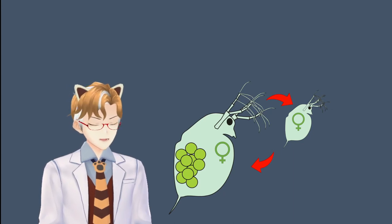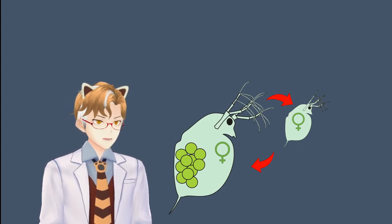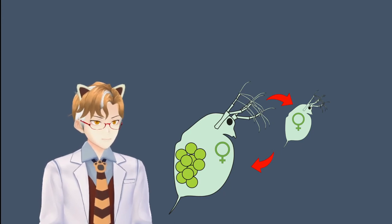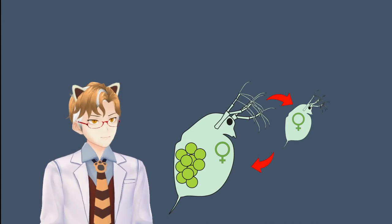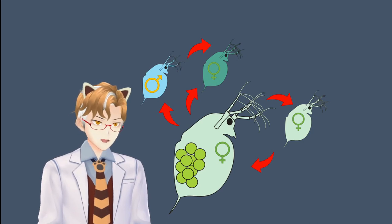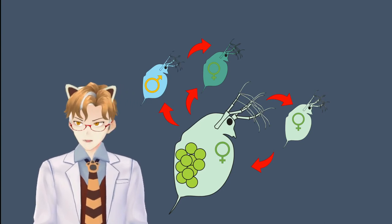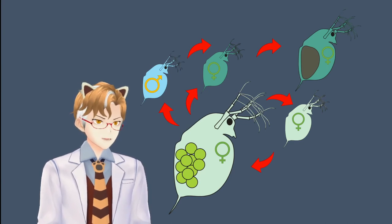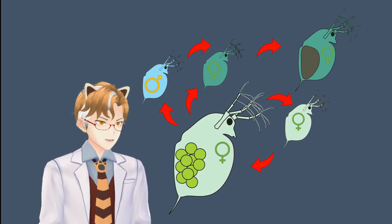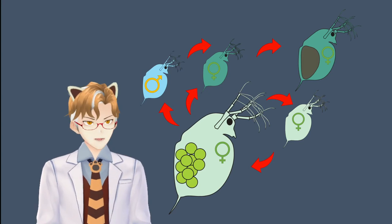Eventually, unfavorable environments will occur for the Daphnia. Seasonally, this could be something like desiccation, cooling water temperatures, overcrowding and low food quality, or even a change in day length. These environmental cues will cause some eggs to develop into males and some into sexual females. When sexual reproduction happens, instead of a new clutch of eggs, the sexual female Daphnia will produce something called an ephippium. Just like the resting eggs of the rotifer, when the Daphnia molts or dies, the ephippia will act like a seed bank, and when conditions are favorable again, parthenogenic females will hatch from the resting eggs and start the cycle over again.